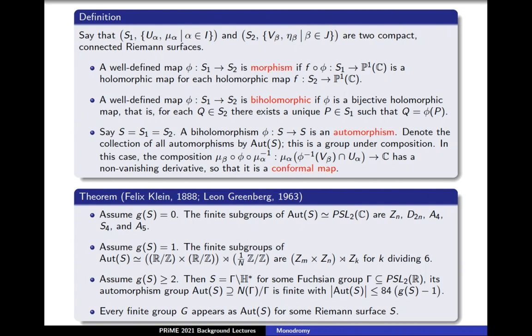Next, we'll consider the following theorem proved by Felix Klein in 1888 and Leon Greenberg in 1963. Assume that the genus of S is 0. The finite subgroups of Aut(S), isomorphic to PSL2(C), are the cyclic group of order N, the dihedral group of order 2N, A4, S4, and A5.